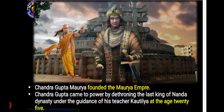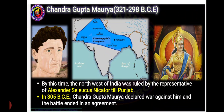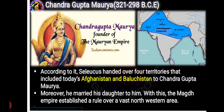Chandragupta came to power at the age of 25 by defeating the last king of the Nanda dynasty under the guidance of his guru. At this time, the northwest of India was ruled by the representative of Alexander, Seleucus Nikator, till Punjab. In 305 BCE, Chandragupta Maurya declared war against him and the battle ended in an agreement. According to the agreement, four territories that included today's Afghanistan and Balochistan were handed over to Chandragupta.